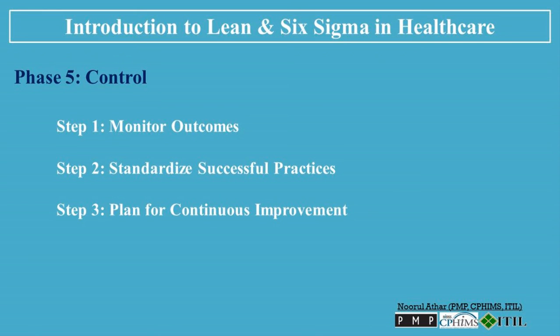Step 3: Plan for continuous improvement. Encourage a culture of continuous improvement by regularly reviewing processes and incorporating feedback from all stakeholders.